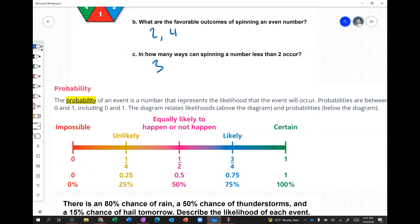Let's look at the definition of probability. The probability of an event is a number that represents the likelihood that the event will occur. Probabilities are between zero and one, including zero and one. This diagram shows how likely something is and its probability. If something has a probability of zero, it's impossible. A coin has two sides - the probability of landing on some other side that doesn't exist is zero. A better example: rolling dice numbered one through six, the probability of rolling a seven would be zero. That's impossible.